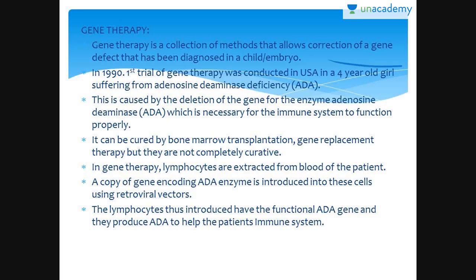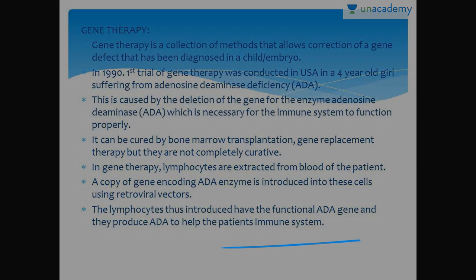Gene therapy is a collection of methods that allow the correction of a gene defect diagnosed in a child or embryo; genes are inserted into a person's cells and tissues to treat the disease. The first clinical gene therapy was given in 1990 to a four-year-old girl with ADA — adenosine deaminase deficiency. The enzyme is required for breakdown of deoxyadenosine; in the absence of ADA, toxic deoxyadenosine accumulates and destroys immune cells called T cells and B cells. The disorder is caused by deletion of the gene for adenosine deaminase on chromosome 20.